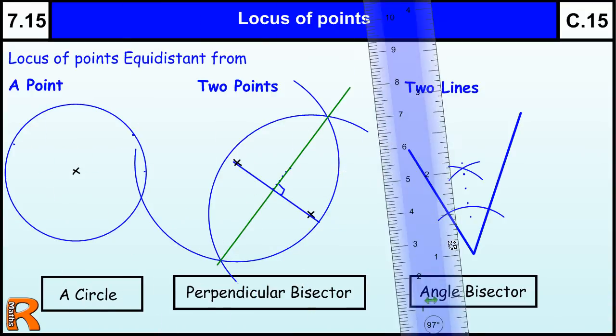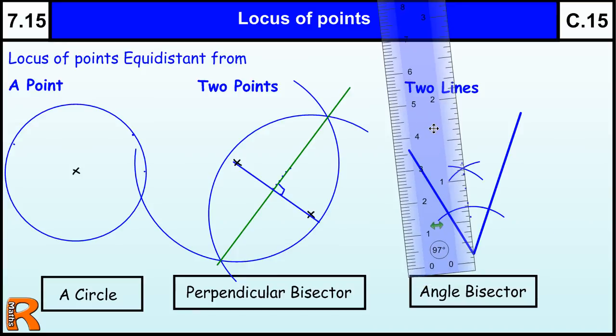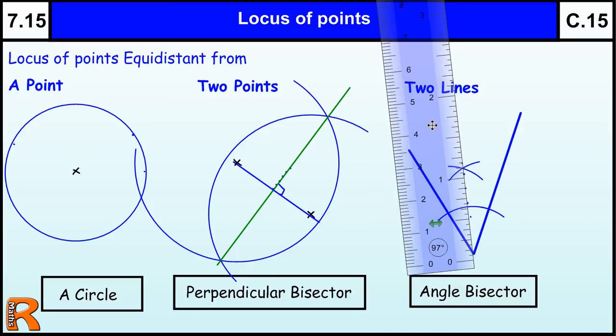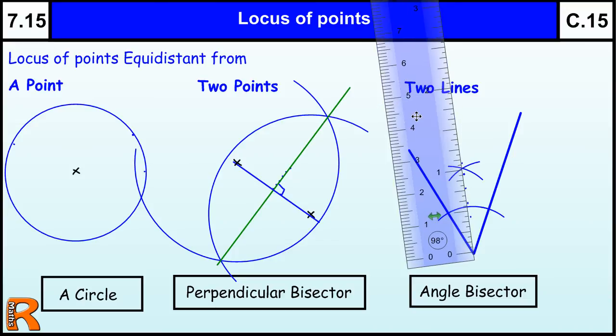Bring in a ruler, and hopefully if I draw these up, it should match up quite nicely. Now the thing with these constructions is, oh, that's not very accurate, let's try that again. The thing is with these constructions is they are supposed to be accurate, so you need to make sure that when you're doing it, you're not just using a ruler and guessing where it goes, you've got to use the compass, because the compass makes it much more accurate.